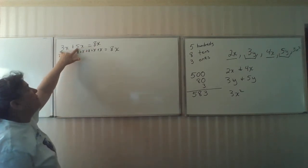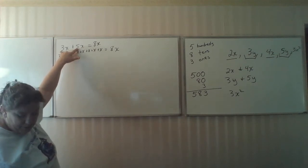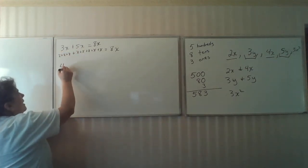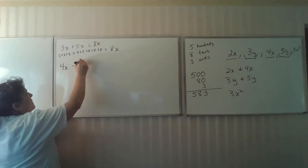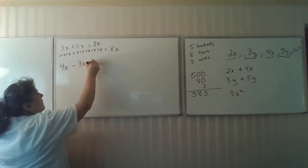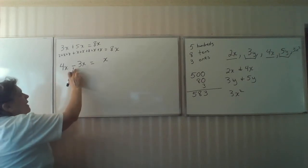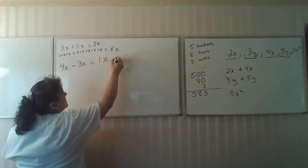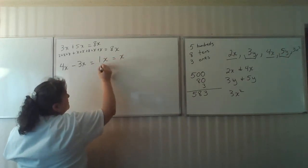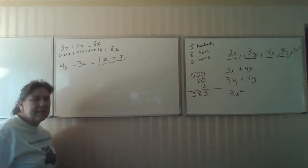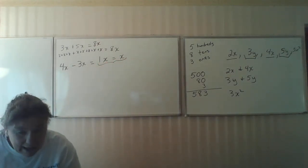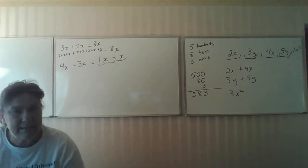Now let's look at 4x minus 3x. We know we're going to have x. 4 minus 3 is 1x, or we can write it as x. Both of these answers would be acceptable.